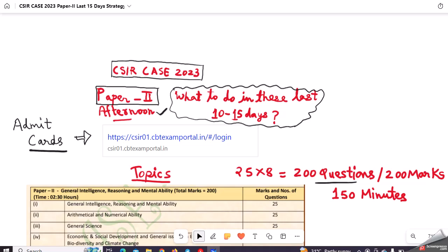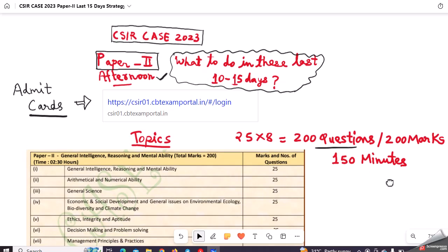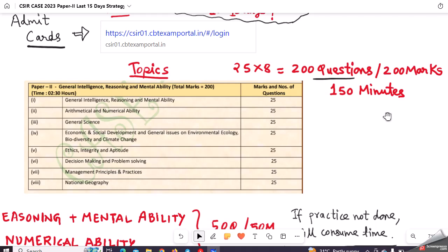Talking about Paper 2, it has total 8 sections. The syllabus is given here, or broadly the topics are given here. Total 25 questions will be asked from each of these 8 topics, so there will be 200 questions for 200 marks, and you will be getting 150 minutes to attempt these questions. How should we approach this or what should be the preparation in these remaining days? I will be suggesting a few important topics from every part, and you have to cover those parts in these remaining days.